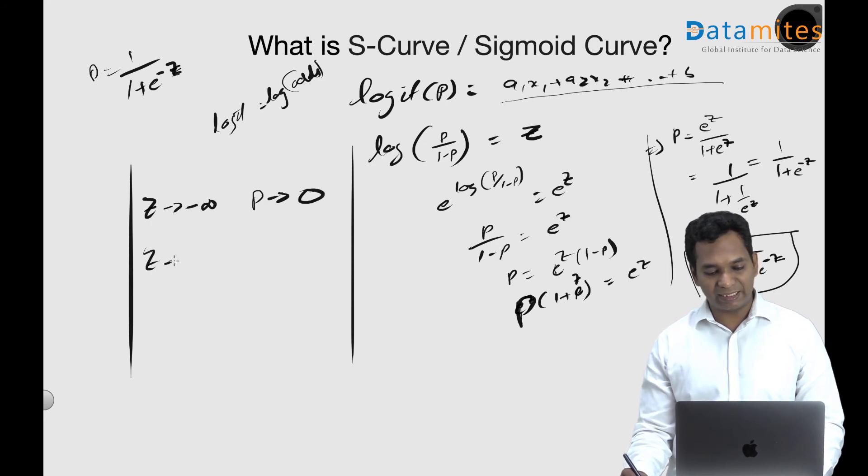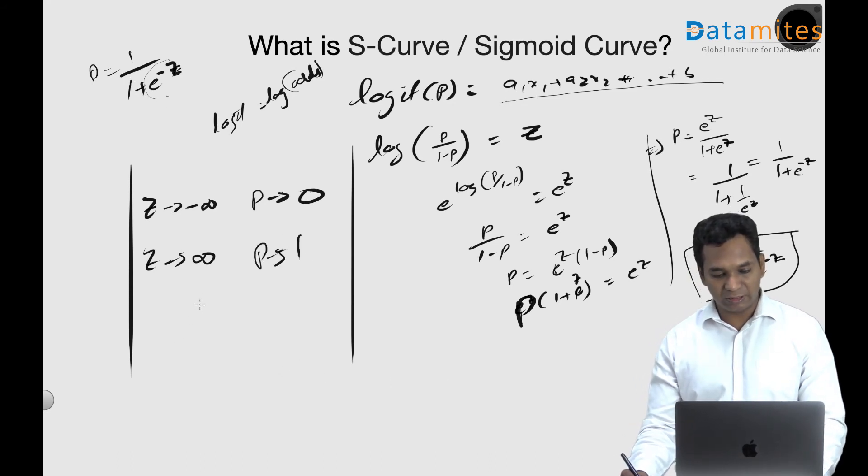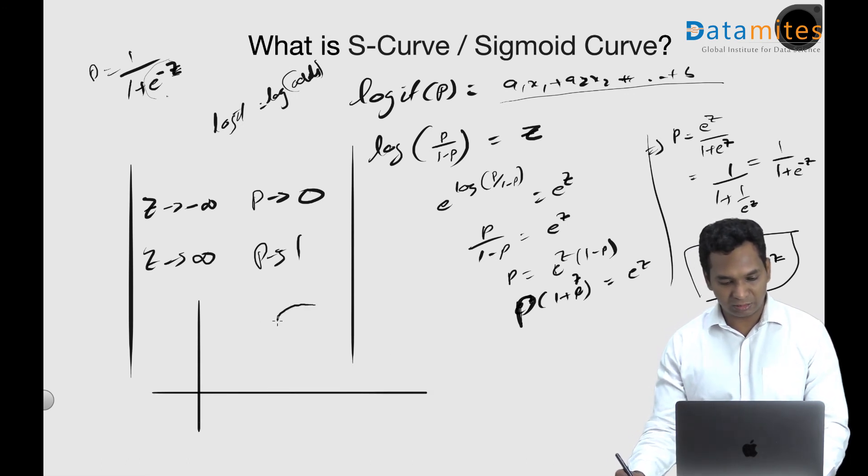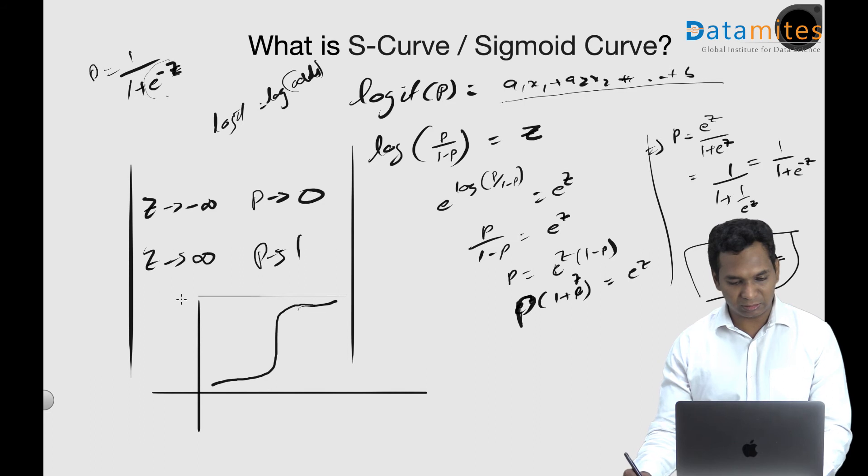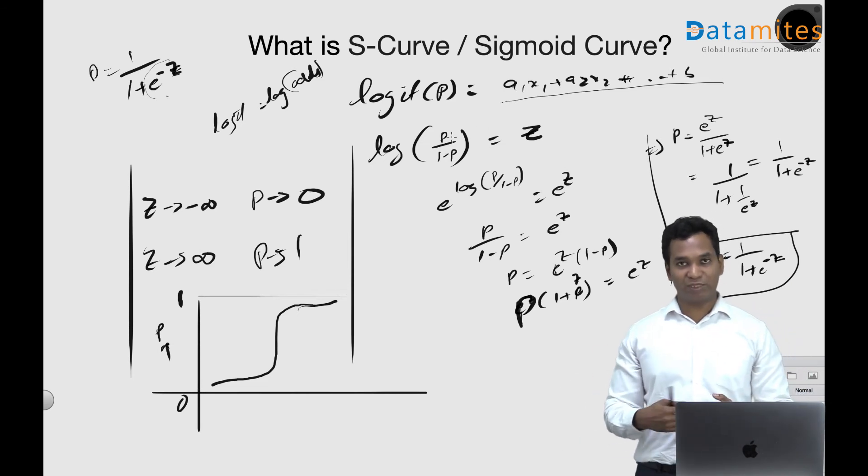When z tends to infinity, this is actually 1 by e to the power of z. If z tends to infinity, 1 by infinity, this entire term will become 0, 1 by 1, p tends to 1. So your line equation which turns from minus infinity to infinity is now being kind of squashed between 1 and 0, which is the probability. And this is what we call the S-curve or sigmoid curve.